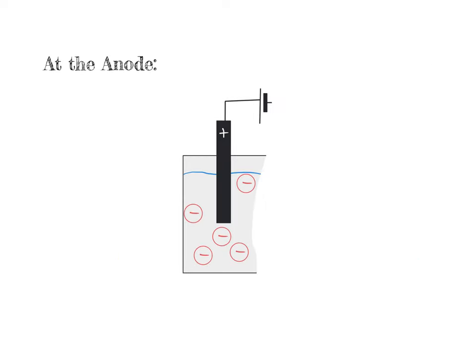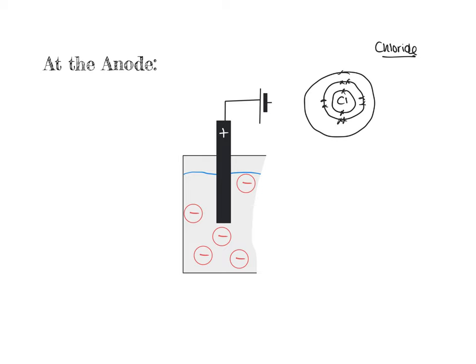This video is actually about what goes on at the electrodes, so let's zoom in and think about what's going to happen at each electrode. Let's think about what a negative ion actually is. A common negative ion — let's go for a chloride ion. Normal chlorine is in group 7 and has 17 electrons, with 7 electrons in its outer shell.